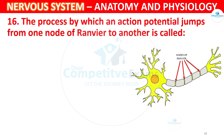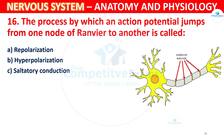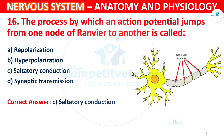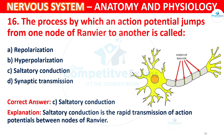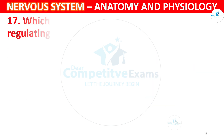Question 16: The process by which an action potential jumps from one Node of Ranvier to another is called what? Options: A) Repolarization, B) Hyperpolarization, C) Saltatory Conduction, D) Synaptic Transmission. The correct answer is C, Saltatory Conduction. Saltatory conduction is the rapid transmission of action potentials between Nodes of Ranvier.